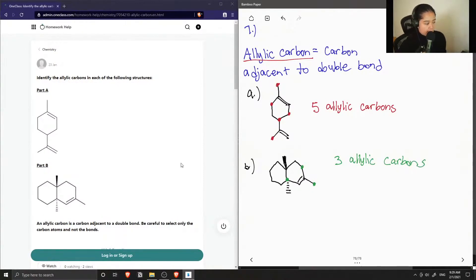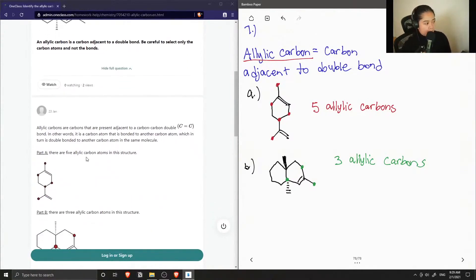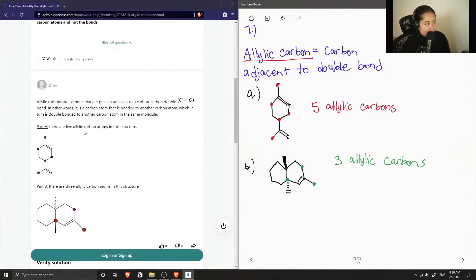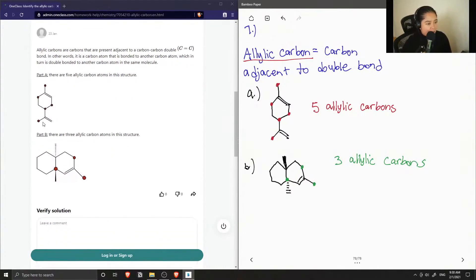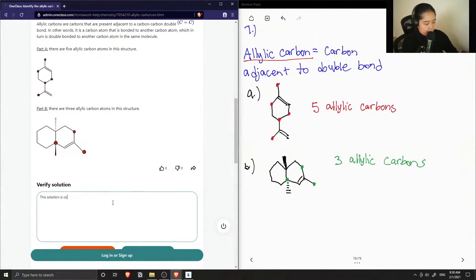Okay, so let's see what the tutor said. Allylic carbons are carbons that are present adjacent to a carbon-carbon double bond. In other words, it is a carbon atom that is bonded to another carbon atom, which in turn is double bonded to another carbon atom in the same molecule. Okay, so they picked the five correct allylic carbons in the first structure, and then the three in the second structure. So this solution is correct.